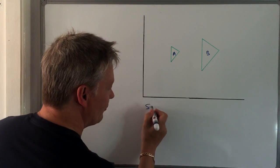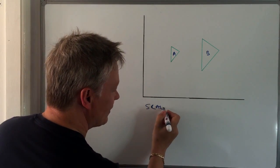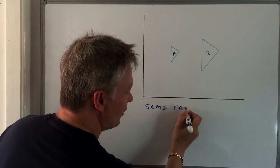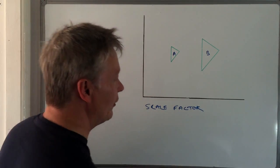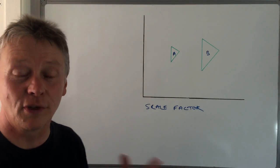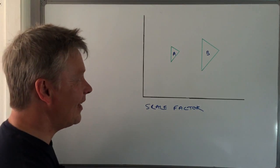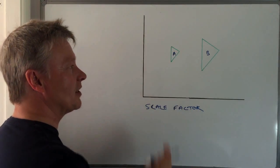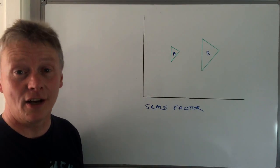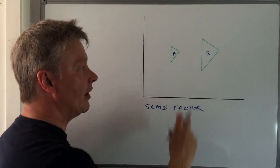The first one is something called the scale factor, and that should be fairly straightforward from working through the question itself because really all you're looking for is how much one particular side of the shape has enlarged to the other shape.